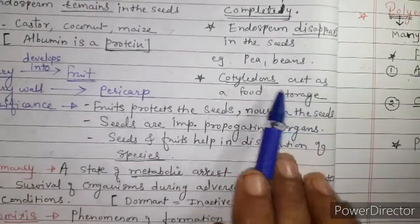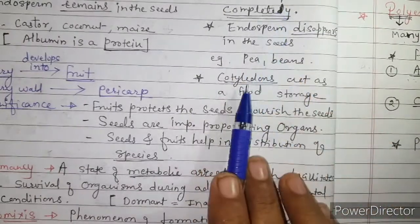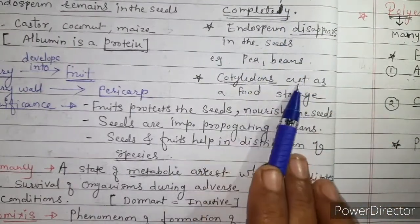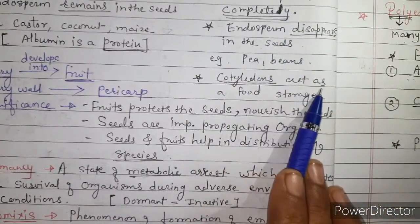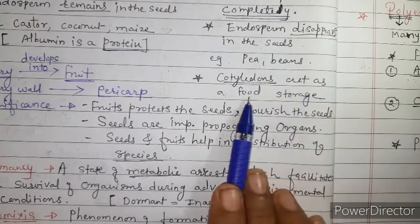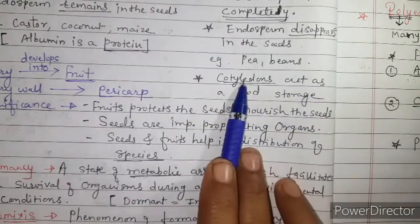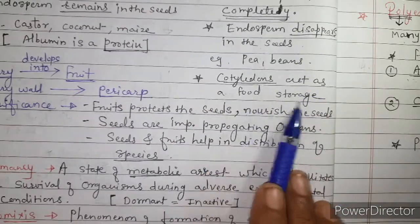So in non-endospermic seeds, cotyledons act as food storage — cotyledons act as food storage organs, taking over the role that endosperm plays in endospermic seeds.